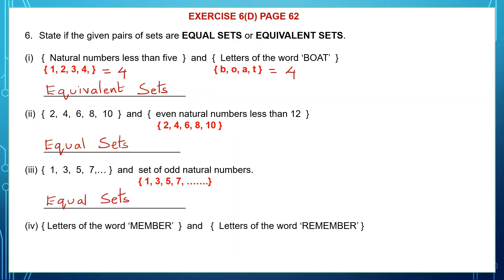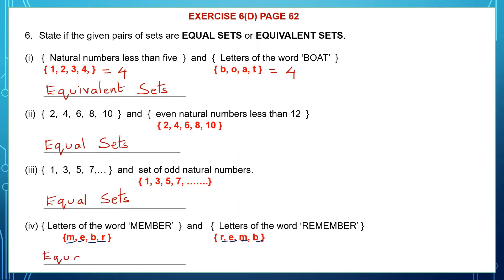Next: letters of the word 'member' is the first set and letters of the word 'remember' is the second set. Let's write the letters in roster form. The first set gives M, E, B, R — we do not repeat letters. From the word 'remember', we get R, E, M, B. Looking at the letters, M, E, B and R are the same on both sides. So these sets have the same elements and are called equal sets.